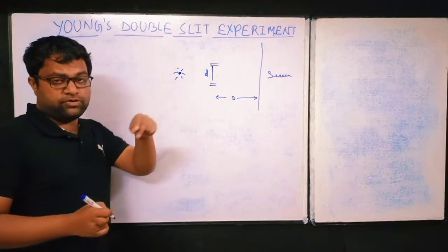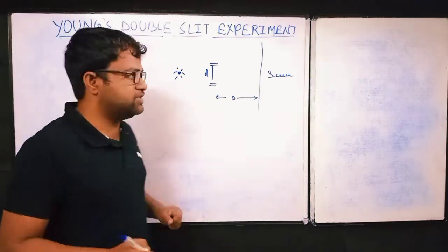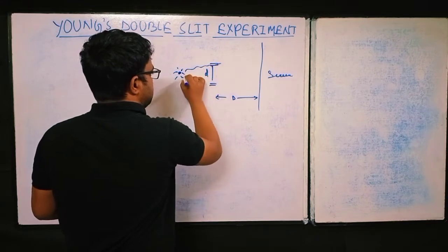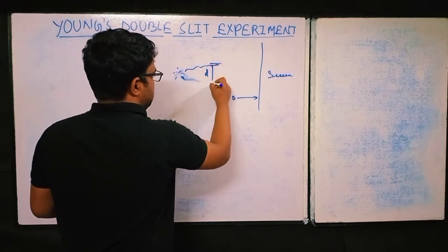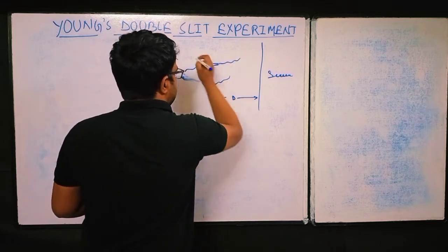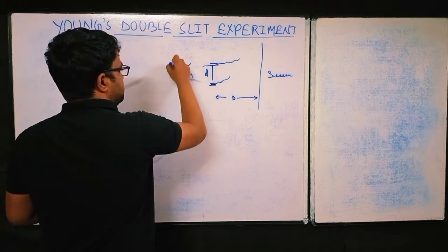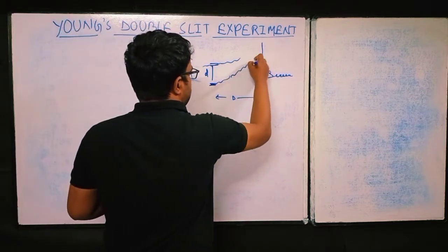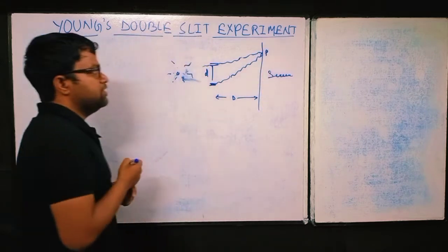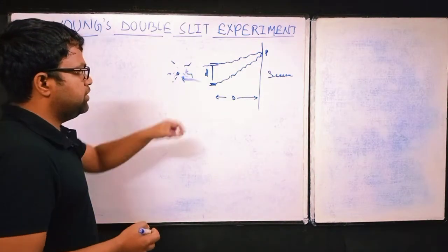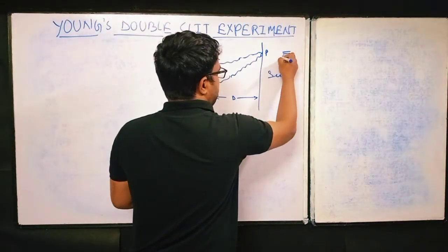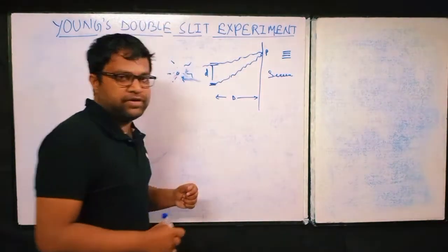The source is monochromatic — having a single wavelength. Light comes through the slits and, since the gaps are very small, it spreads and interferes. The waves travel in all directions from the source and interfere at a point P on the screen. Young observed bright and dark fringes — maxima and minima — on the screen.